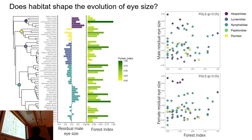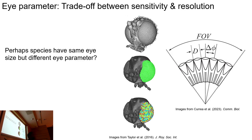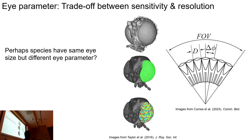Very perplexing findings, but still interesting. What I'm capturing is eye surface area, but I don't really know what's happening in terms of facet number and facet size. That's interesting because there's a trade-off between sensitivity and resolution. The diameter D of an individual facet determines how much light actually enters the ommatidium, and delta phi is the angle between two ommatidia. You can either increase facet size to get more light and increase sensitivity, or decrease the delta phi angle to get more ommatidia and increase resolution — but you can't optimise both. Two species could have the same eye surface area but modify their eye parameters to balance the trade-off between facet size and number.